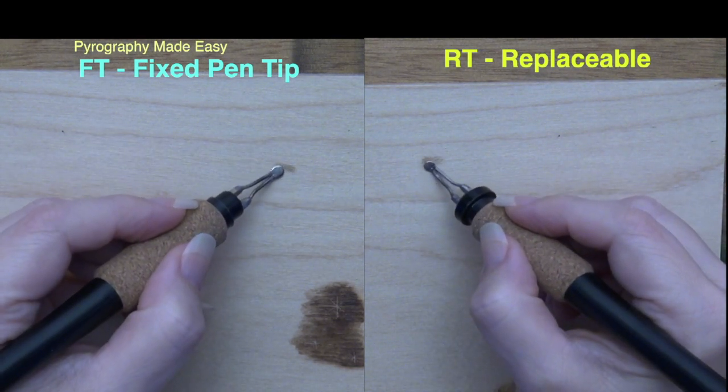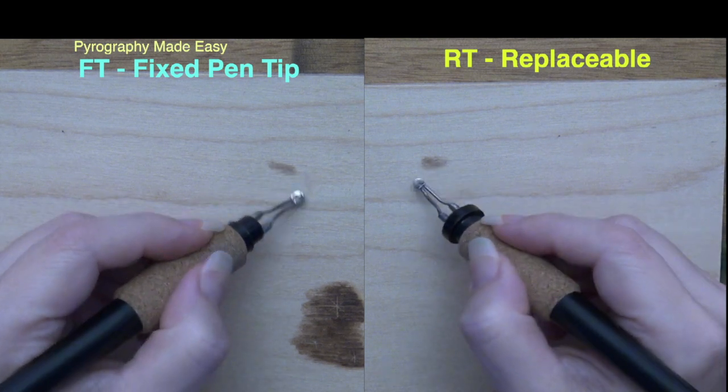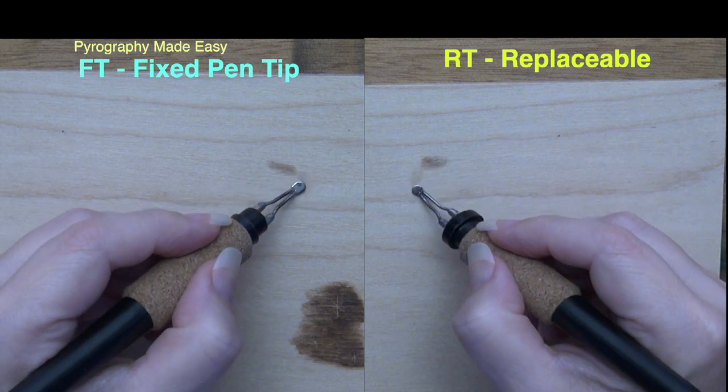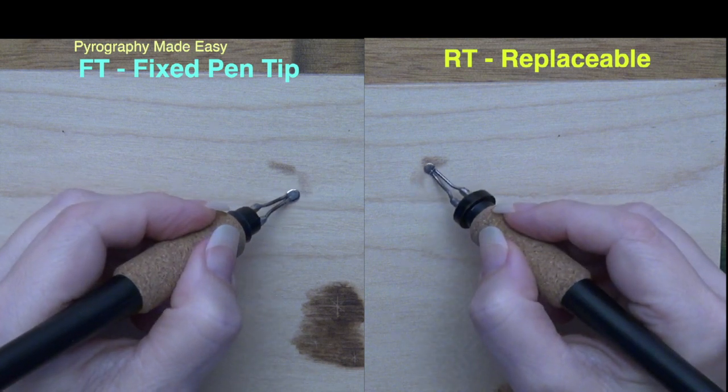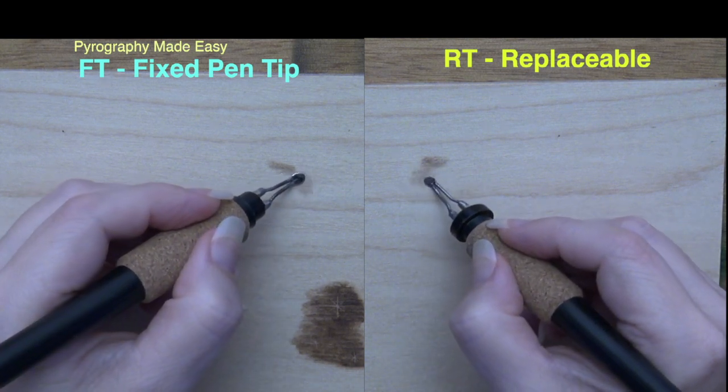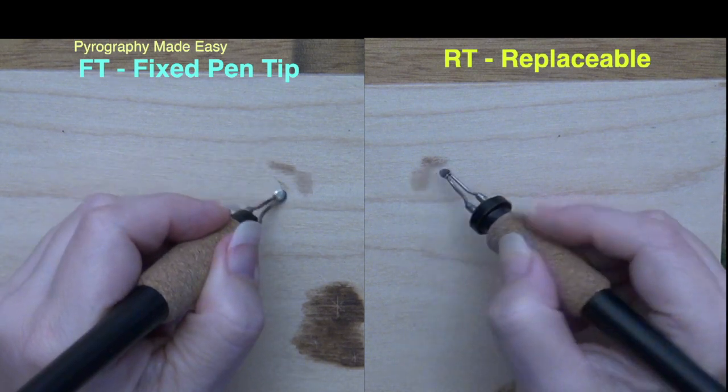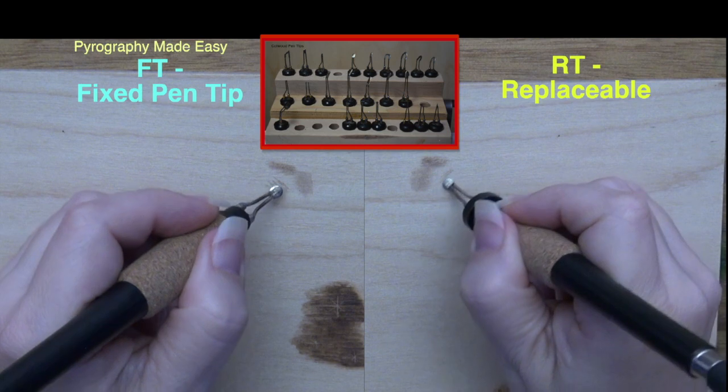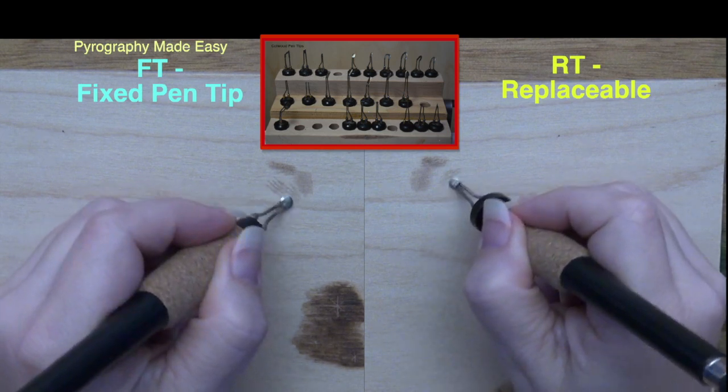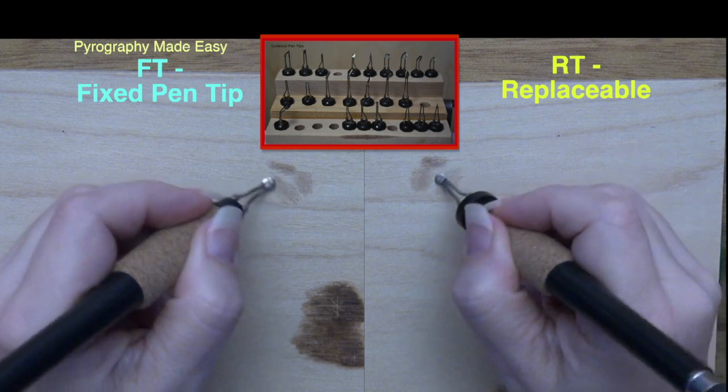I can't tell you that. While I have one fixed tip handset, I haven't used it that much. When I did play around with it, I couldn't tell the difference between it and the replaceable tip. I personally use the replaceable tip system, mostly because I have a wooden holder that keeps all of the pen tips organized and nearby for easy use.